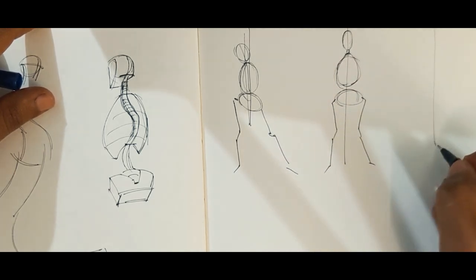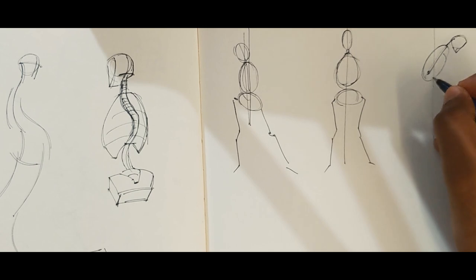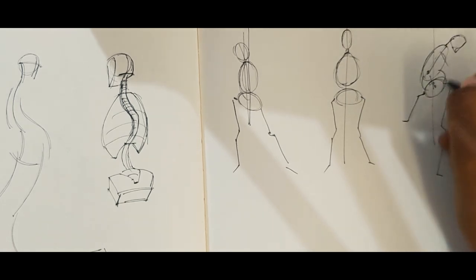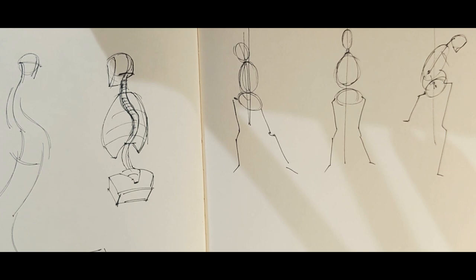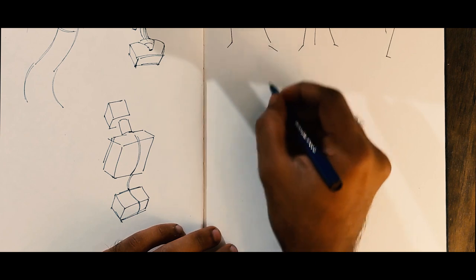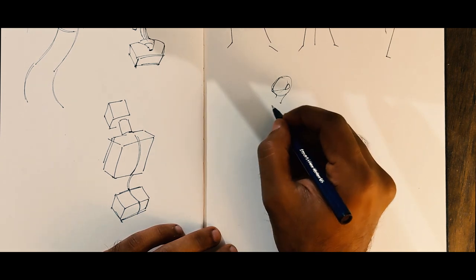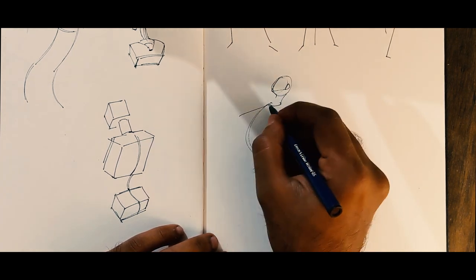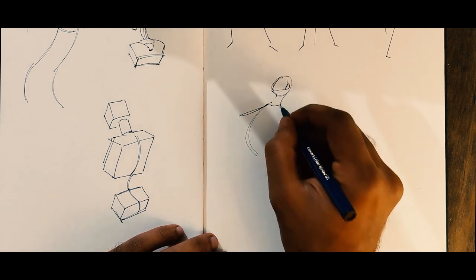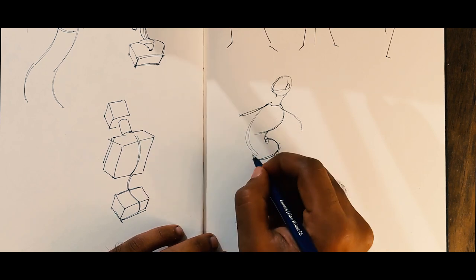Once you're comfortable with translating the major masses or the eight parts in their relationship with each other, then you move on to understand what movement in the body is. As beginners, something that all of us tend to do—the very common mistake—is that all our figures tend to look very static, very rigid in space. To understand how to communicate that movement, it's very essential to understand what center of gravity is. Once you get command over manipulating center of gravity, you are in a position to exaggerate these figures and make it more animated.